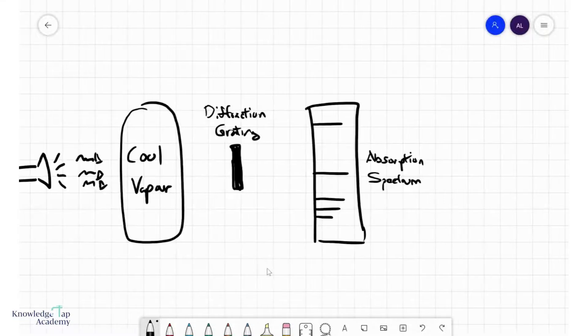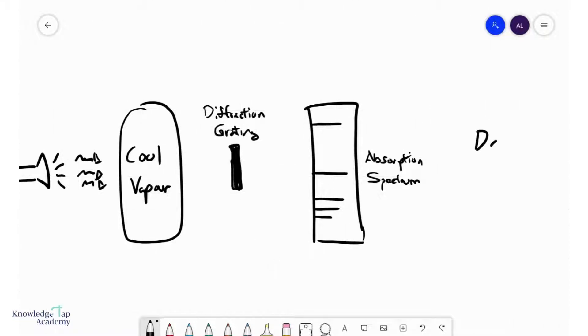An absorption spectrum is a series of dark lines on a colored background. The absorption spectrum serves the same purpose as an emission spectrum.